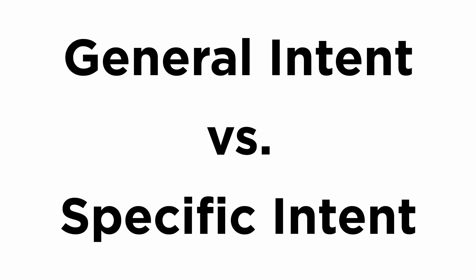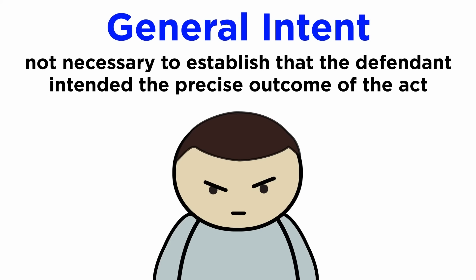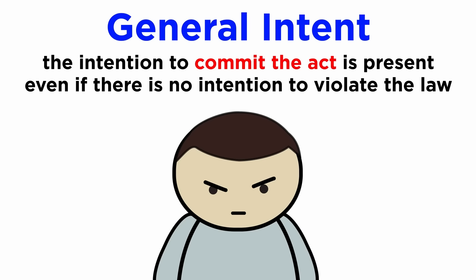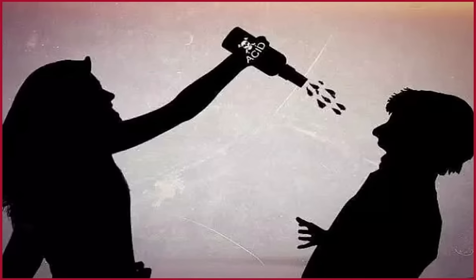Guilty intent can also be classified into two parts: general intent and specific intent. In crimes related to general intent, the prosecution does not need to establish that the defendant intended the precise outcome of the act. This sounds very similar to strict liability, but in general intent crimes, the intention to commit the act is present, even if there is no intention to violate the law. Therefore, the guilty intent is not required to be specifically proven. A person throwing acid on another person's face is guilty without specifically proving the intent — they have committed a crime by the sole virtue of the fact that they voluntarily committed it.